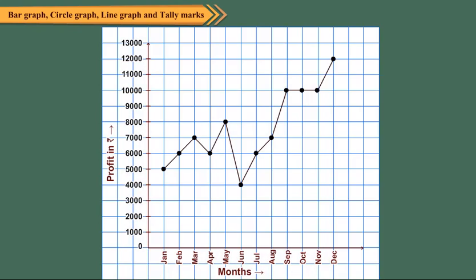Now, let us discuss about line graphs. A line graph represents information about two items at a time. Both the items are related and vary with respect to each other. Line graphs are often used by businessmen to show how much profit they are making. Consider the line graph which shows the profit of a shopkeeper during the course of one year.